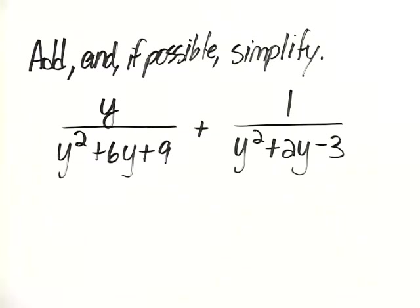Add, and if possible simplify, y over y squared plus 6y plus 9 plus 1 over y squared plus 2y minus 3.